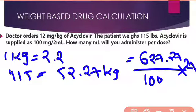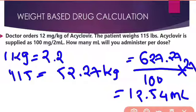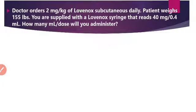When we calculate this, we get an answer of approximately 12.45 ml. So the patient requires 12.45 ml of acyclovir per dose. Let's move to our next problem.